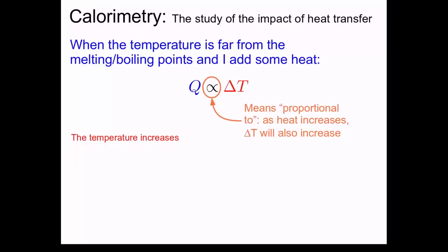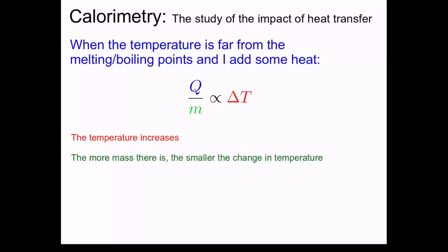What else can impact the amount of the temperature change for a given amount of heat energy? The more mass there is, the smaller the change in temperature. If I give a certain amount of energy to a small block, it will get hotter than a much larger block of the same material. So mass is going to be underneath Q.